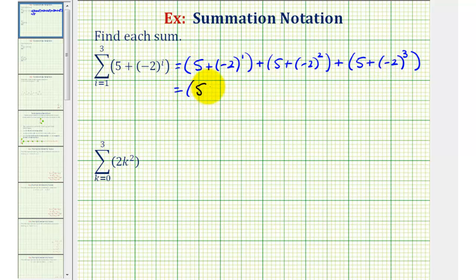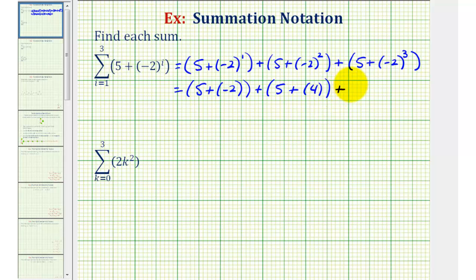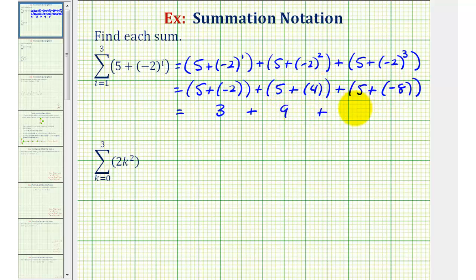Five plus negative two to the first is just negative two. Plus five plus negative two squared is positive four. And then five plus negative two to the third would be negative eight. Five plus negative two is three. Five plus four is nine. And five plus negative eight is negative three. So our sum is positive nine.